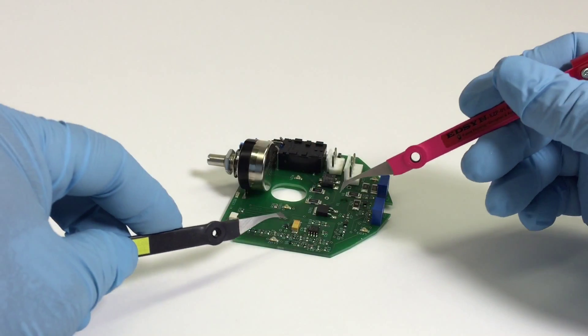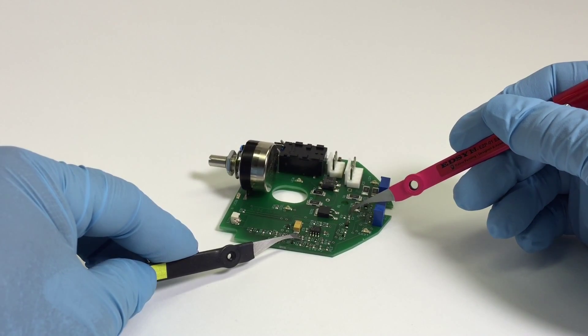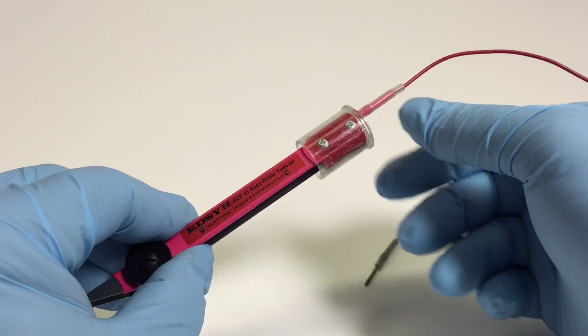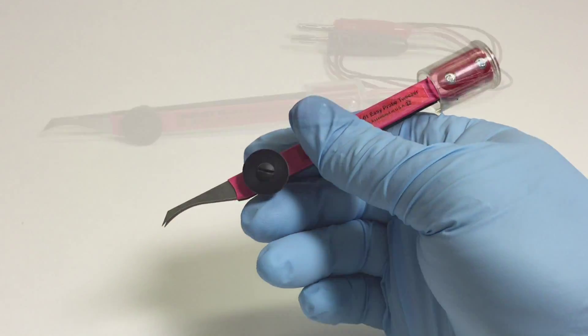The tweezer blades can be easily separated when your test points are further away than what the tweezer setup will allow. To use one of the many configurations just as a tweezer, you can quickly remove the pluggable test leads so they don't get in the way.